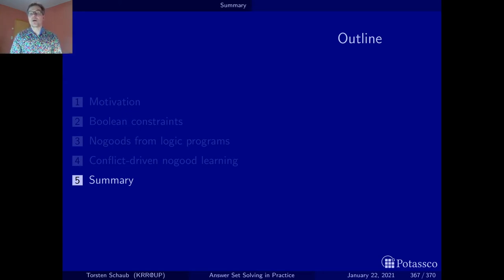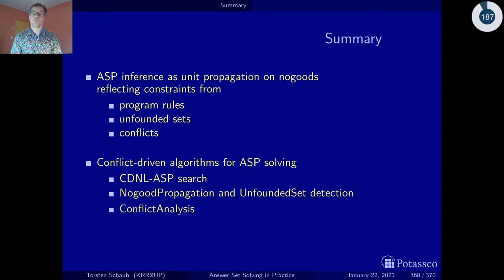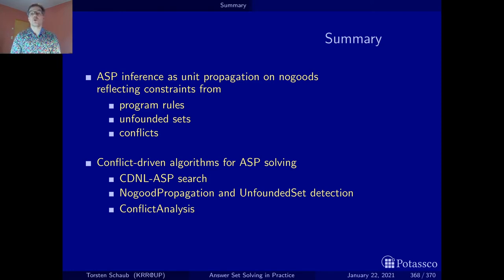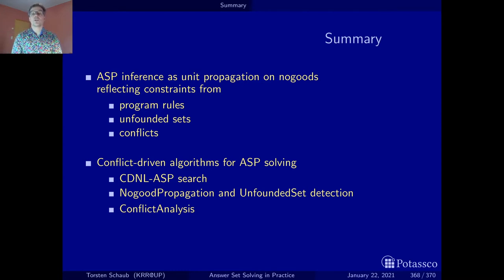The end is at hand, so let's wrap up this part with a few things to remember. I know I made you suffer going through all these characterizations of stable models, starting with the axiomatic one, the operational one, and then finally the no-good base characterization. It is important for you to see the foundations — the origins — of the ideas that finally led to this no-good base characterization of stable models.